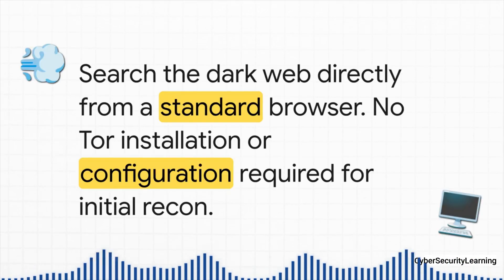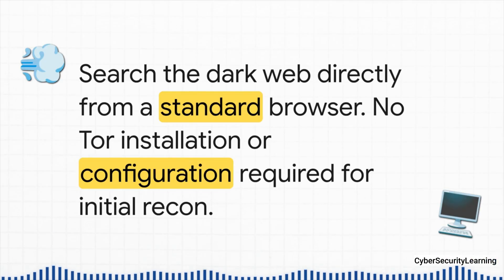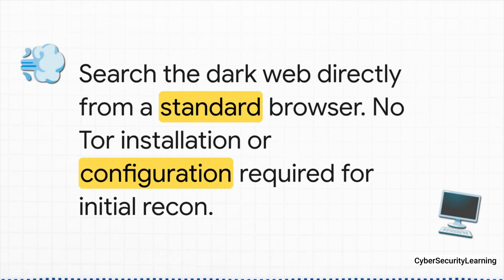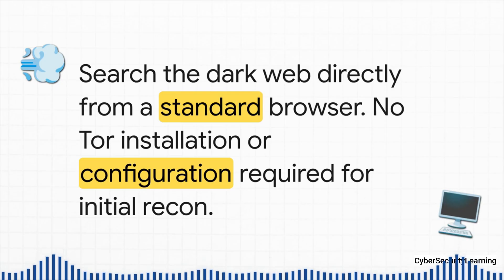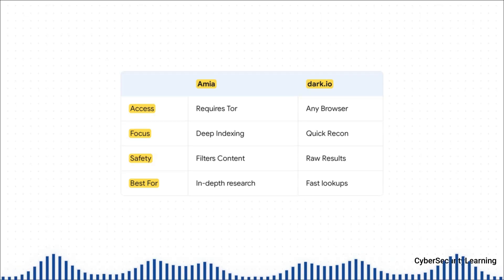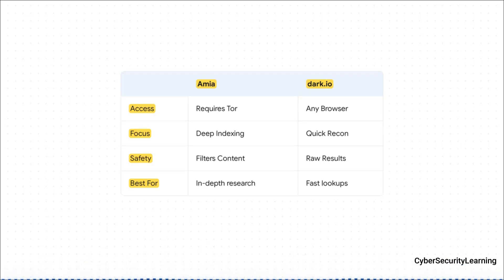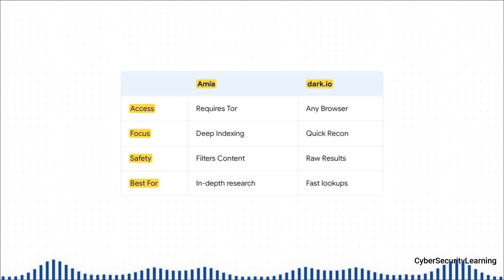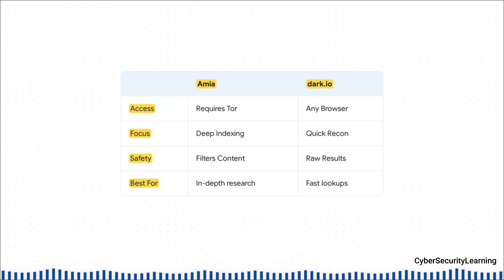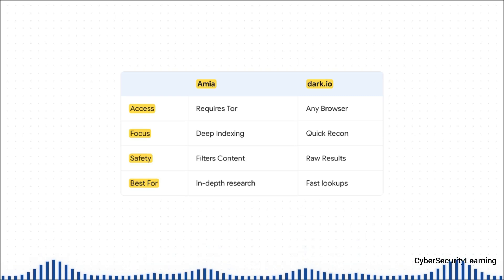But what if you just need to do a quick search without firing up the whole Tor browser to check on a lead? That is where a tool like dark.io shines. Think of it like a little porthole into the dark web that you can peek through using your normal, everyday browser. AMIA, accessed through the Tor browser, is your go-to for serious deep investigations — you get a curated index and safety filters. Dark.io is all about speed and convenience for grabbing initial leads before you go all in.